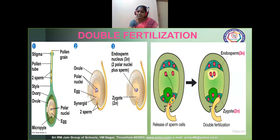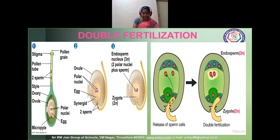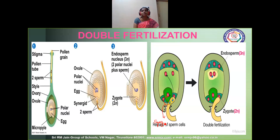The first male gamete fuses with the egg present inside the ovule. This fusion — where the male gamete fuses with egg — we will call this as syngamy, which is otherwise called true fertilization. This is the first fertilization taking place here.